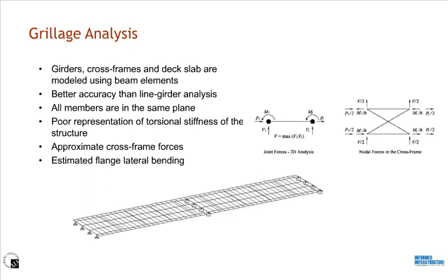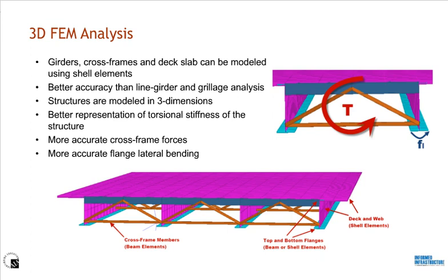The third and last analysis type is the 3D FEM analysis. In this type, the deck and web are typically modeled using shell elements. Flanges can be modeled using either shell or beam elements. Since the structures are modeled in three dimensions, the depth of the structure is also captured, and the torsional behavior of the structure is captured better than the other two analysis types. Also, since individual cross-frame members are modeled using beam elements and flanges are analytically modeled, cross-frame forces and flange lateral bending results are more accurate because they are directly obtained from the analysis results.